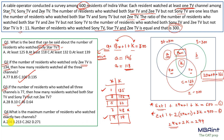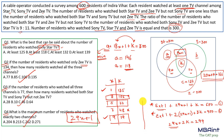Question 4: what is the maximum number of residents who watched exactly two channels? The exactly-two region is 29x+1. To maximize it, we use the maximum x value, which is x=9. So 29(9)+1 = 261+1 = 262. You just need to know the basic optimization equations to solve this entire question. Hope you understood — thank you!